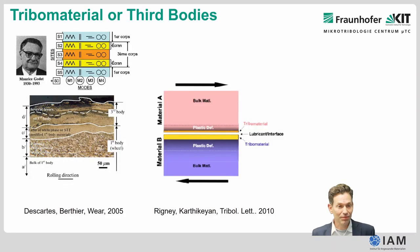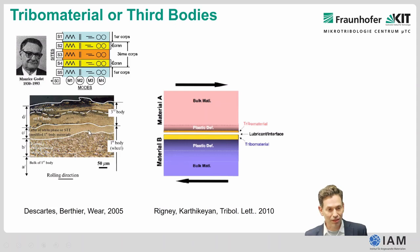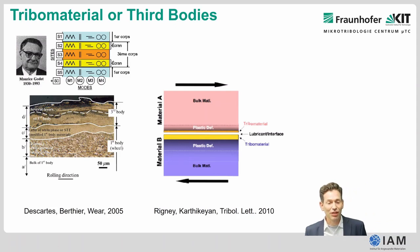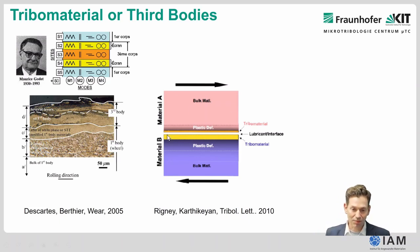This third body was coined by Maurice Godet and is the material that is different from the first and second bodies — it accommodates the shear or the friction. Here you can see an example of a real rail contact after tribological stressing, with several layers of new material formed after some time of sliding. In another publication from Dave Rigney, this has been coined tribomaterial — a zone between material A and material B, even with a lubricant in between.